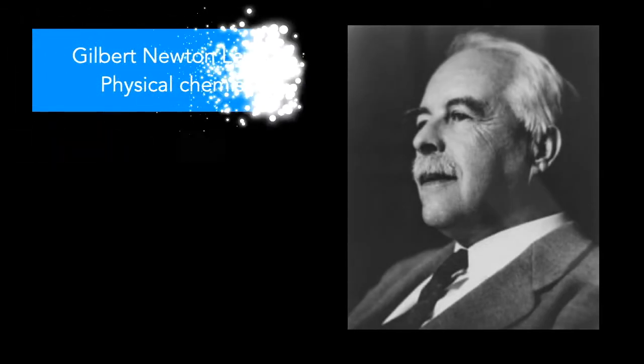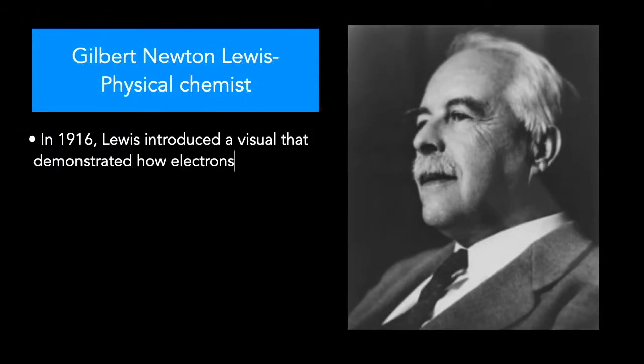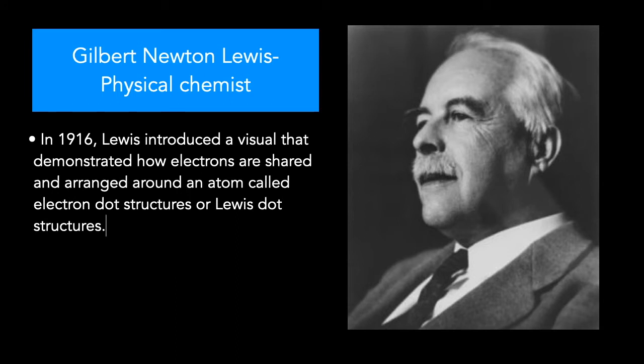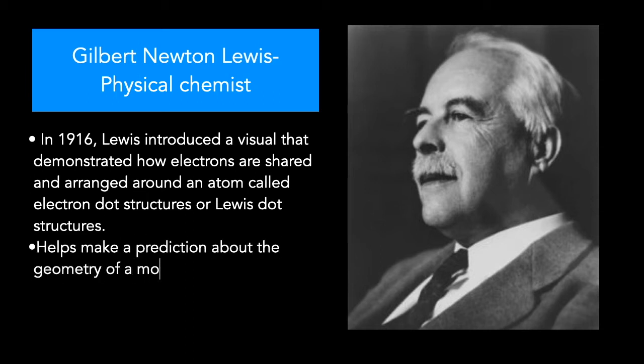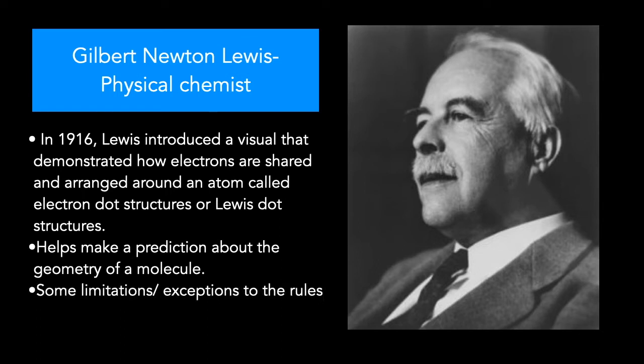Here's some background information on Lewis dot structures. Gilbert Lewis Newton was a physical chemist that introduced a visual in 1916 that demonstrated how electrons are shared and arranged around an atom. These visuals are called electron dot structures, or commonly known as Lewis dot structures. They help make a prediction about the geometry of a molecule. However, there are some limitations and exceptions to the rules that we will look at later in this video.